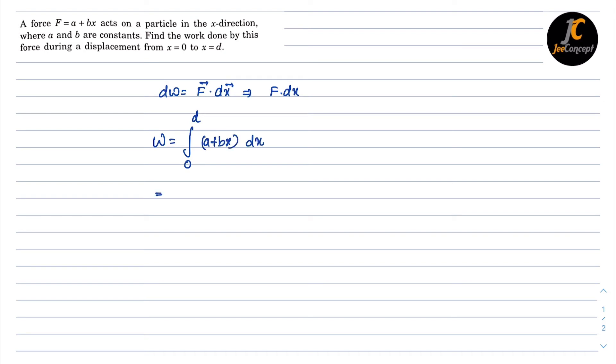Now if we integrate that we will get A times x from 0 to d plus B times x square by 2 from 0 to d.